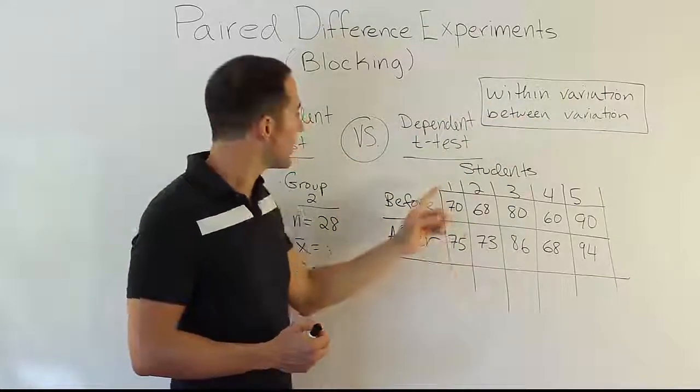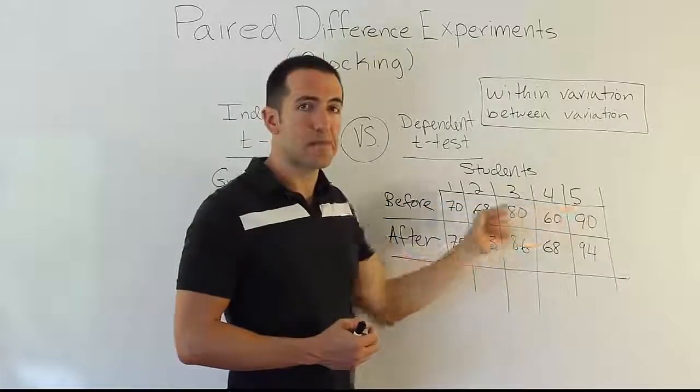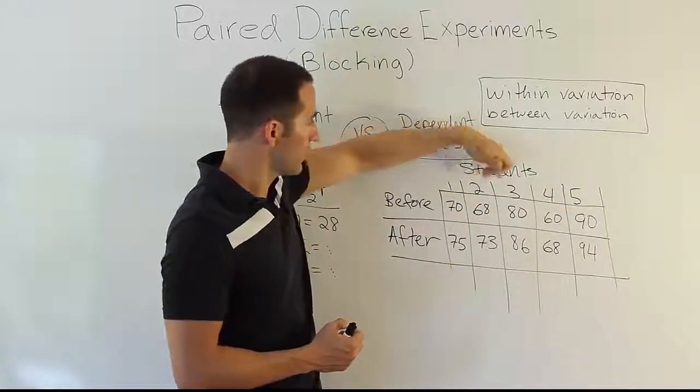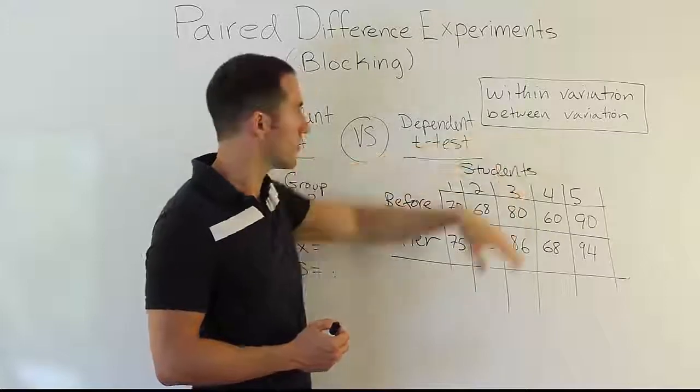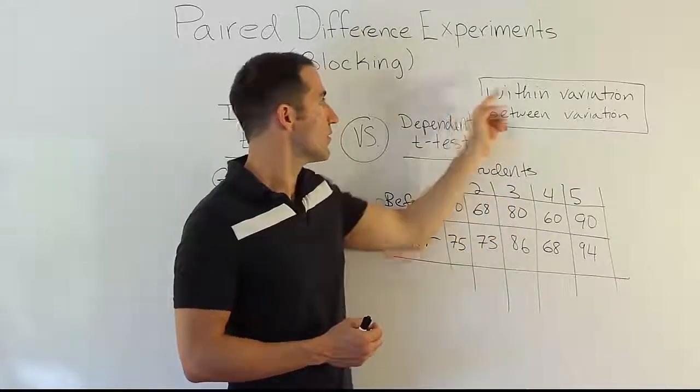If you hear that phrase, within variation refers to the variation that occurs within the subjects. So differences between subject one, two, three, four, five, six, so on and so forth. Between any pair of students, there's going to be natural variation. That's the within variation.